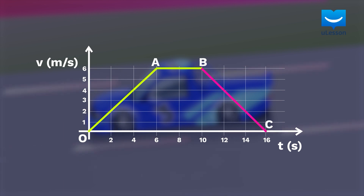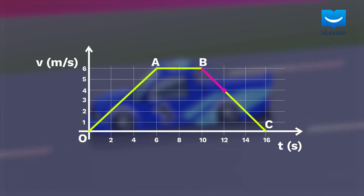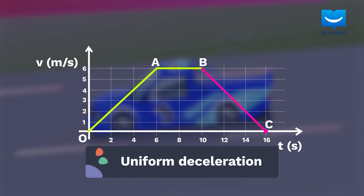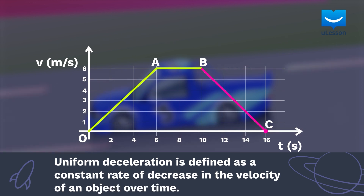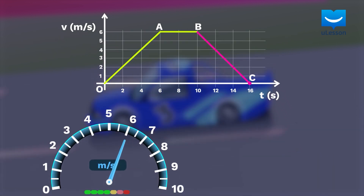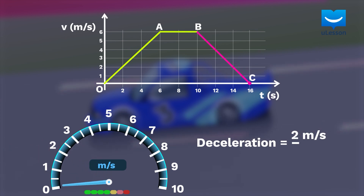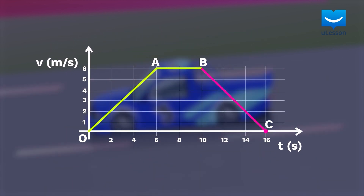We move on to the final part of our graph, from B to C. This is the part where the velocity reduces by a constant amount with time. In this example, the velocity reduces by 2 meters per second every 2 seconds, and we call this uniform deceleration. This refers to a constant rate of decrease in the velocity of an object over time. For this example, the deceleration is 2 meters per second over 2 seconds, which equals 1 meter per second squared. Note that the gradient of the velocity-time graph during deceleration is negative as it is sloping downwards.